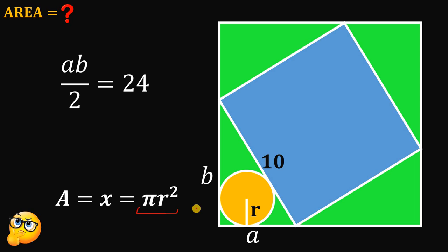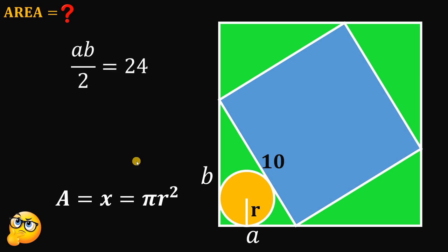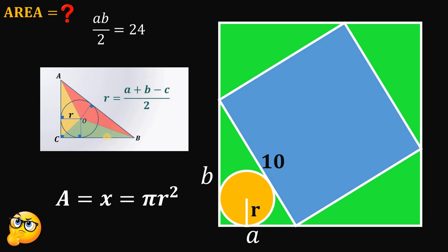Now the question is, how do we find the radius of this circle? To answer this, we use the concept that in any right triangle, the radius of the inscribed circle must be equal to A plus B minus C, divided by 2 — that is, the sum of the legs minus the hypotenuse, all divided by 2.